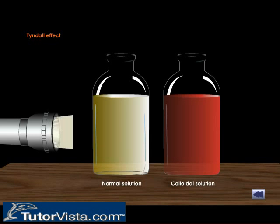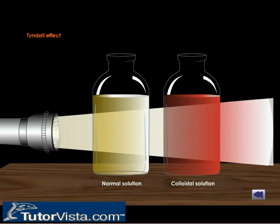Tyndall effect. When a strong beam of light is passed through a colloidal solution, the light is scattered by the colloidal particles. This scattering of light is called the Tyndall effect. The illuminated beam or cone formed by the scattering of light is called the Tyndall beam or Tyndall cone. The path of the light becomes visible when viewed from a direction at right angles to that of the incident light.